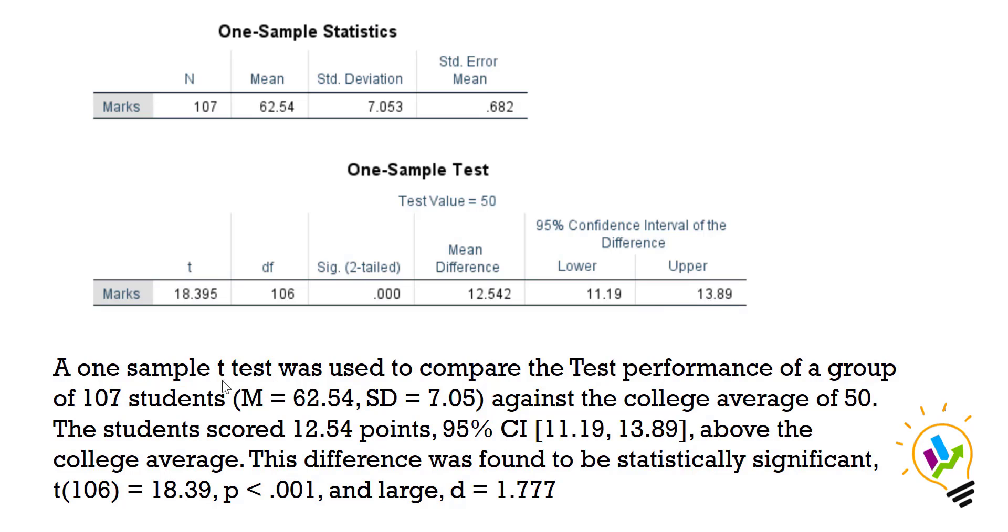We need to write the APA score like this: A one-sample t-test was used to compare the test performance of a group of 107 students, M = 62.54, SD = 7.05, against a college average of 50. The students scored 12.54 points, 95% confidence interval [11.19, 13.89], above the college average.